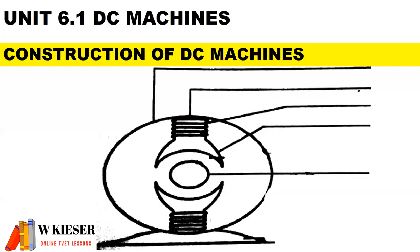It's important to note that for DC machines, the construction of a motor and the construction of a generator is exactly the same, and therefore we refer to the term 'machine' in this unit. Here is a two-pole machine, and it's important to be able to draw and label a two-pole machine for your national exam.